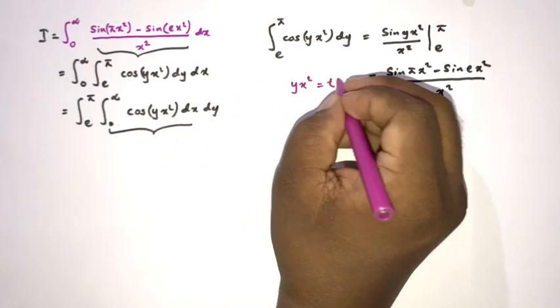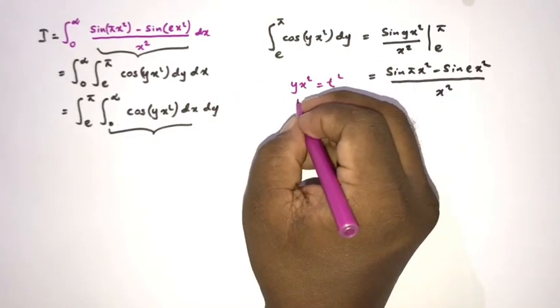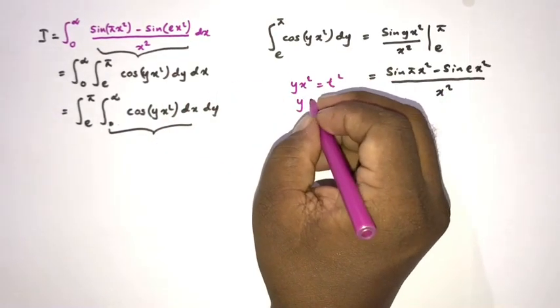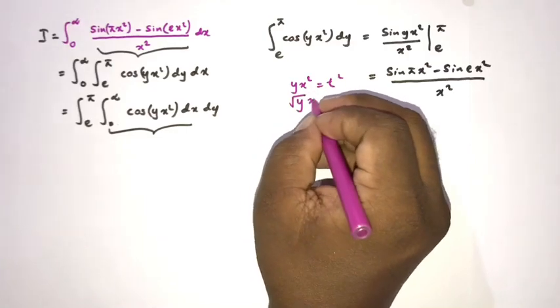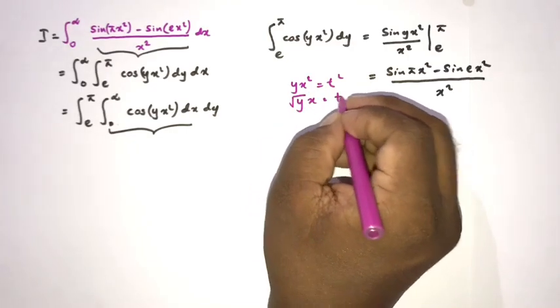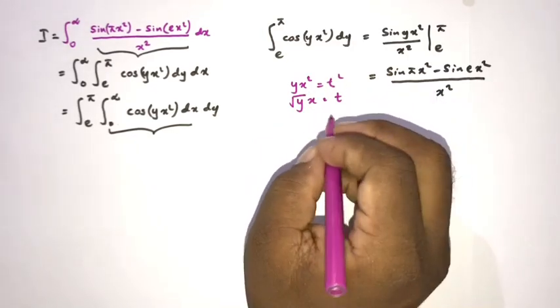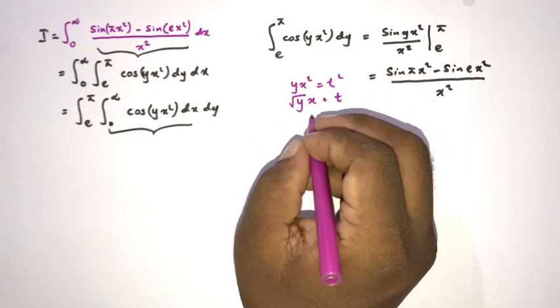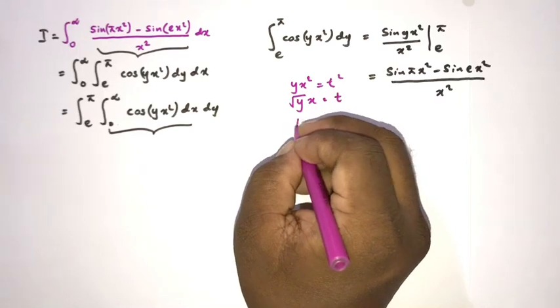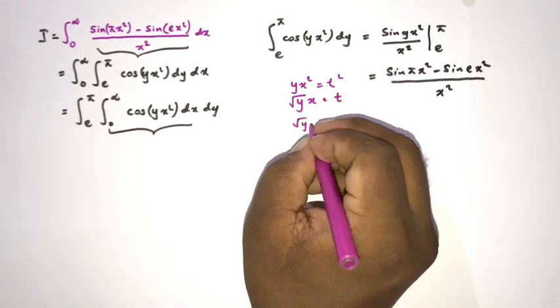From y x squared equals t squared, we get the square root of y times x equals t. Differentiating both sides, we have the square root of y times dx equals dt. The limits remain from 0 to infinity.